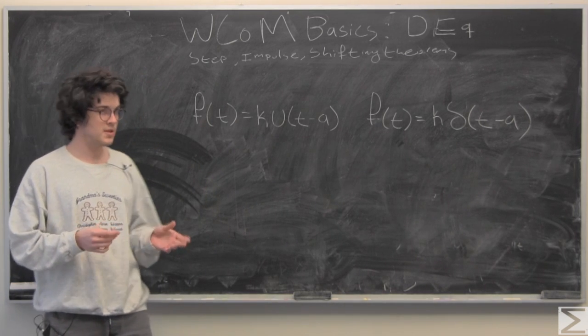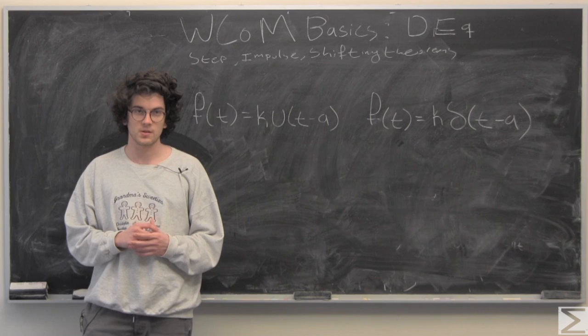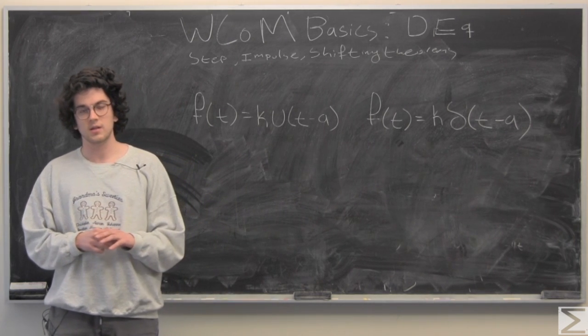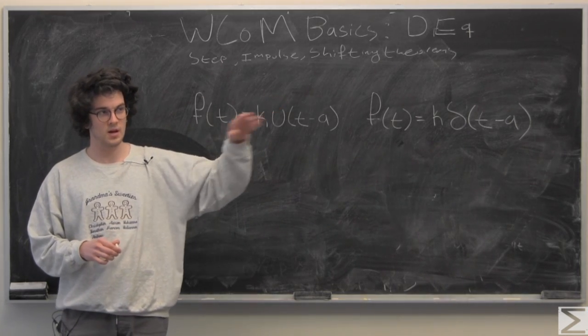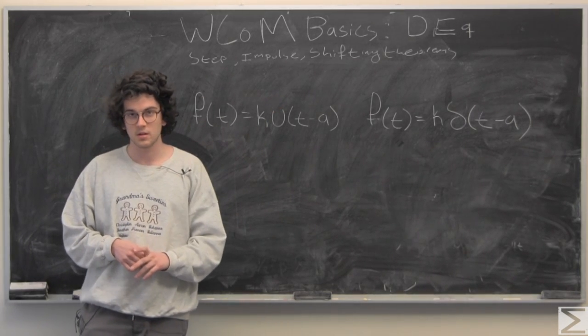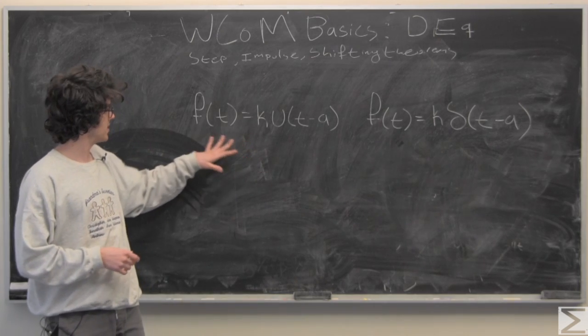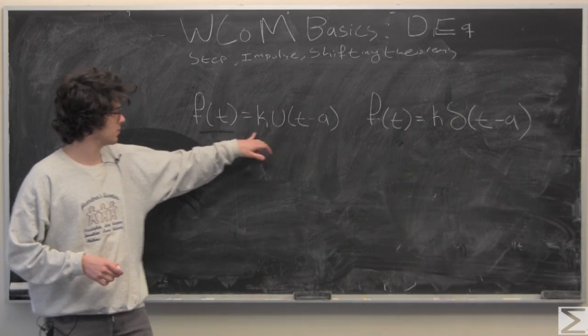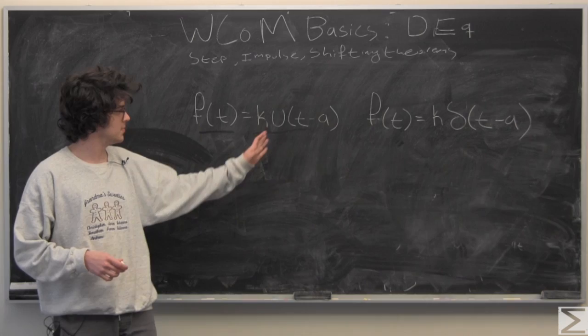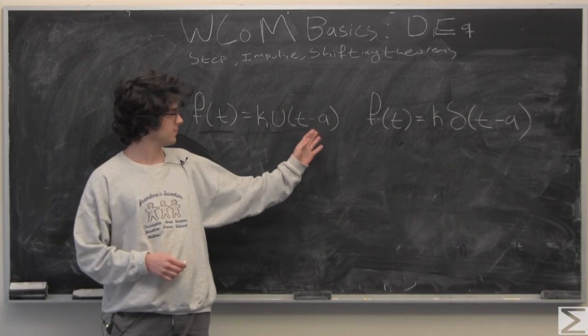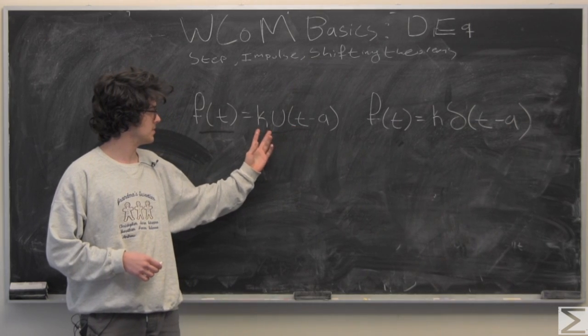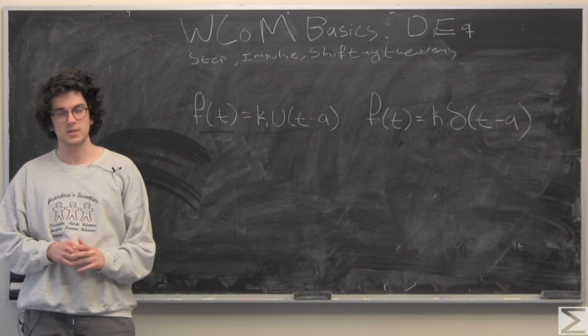So a step function, simply put, is a function that remains at zero until a certain point, and then at that point it becomes a constant-valued function. This is represented with f(t) = k*u(t-a), where at a the function becomes f(t) = k.